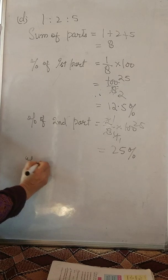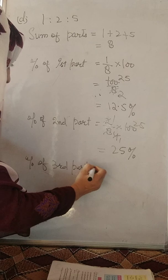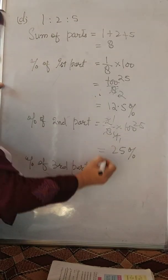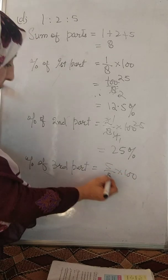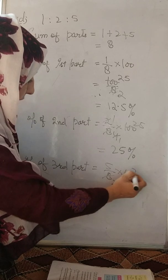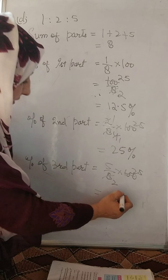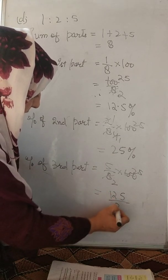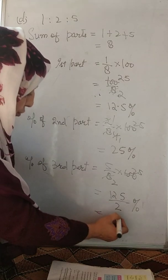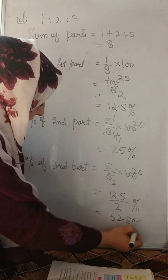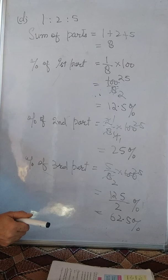Percentage of third part. Percentage of third part is five divided by eight into hundred. Yehaan par iski cancellation karengi four two are eight. Four twenty five are hundred. Five into twenty five, wo ho gaya one twenty five divided by two percent. Wo nikalega twelve point five, two six are twelve, two two are four, point five percent. Eek cheez yahaan par aapko bata hai. In tino percentage iska sum nikalna chahiye hundred.